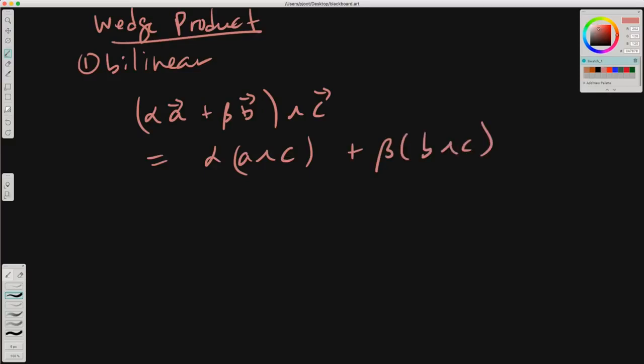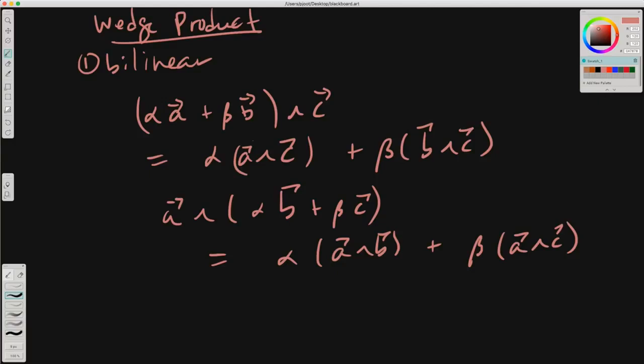Similarly, if we take A and wedge it with alpha B plus beta C, we get alpha A wedge B plus beta A wedge C. So wedge product is bilinear in either direction and it's antisymmetric.